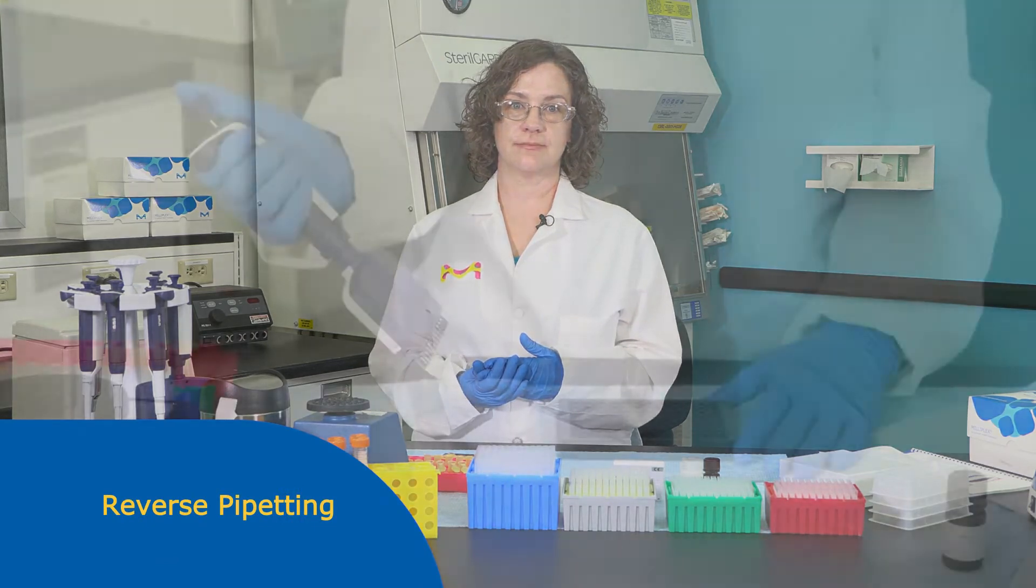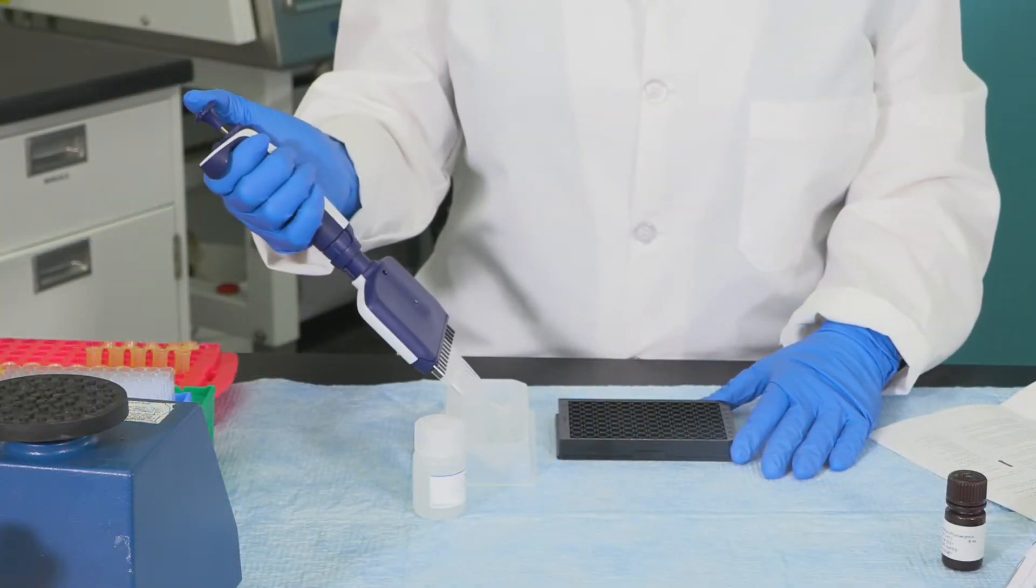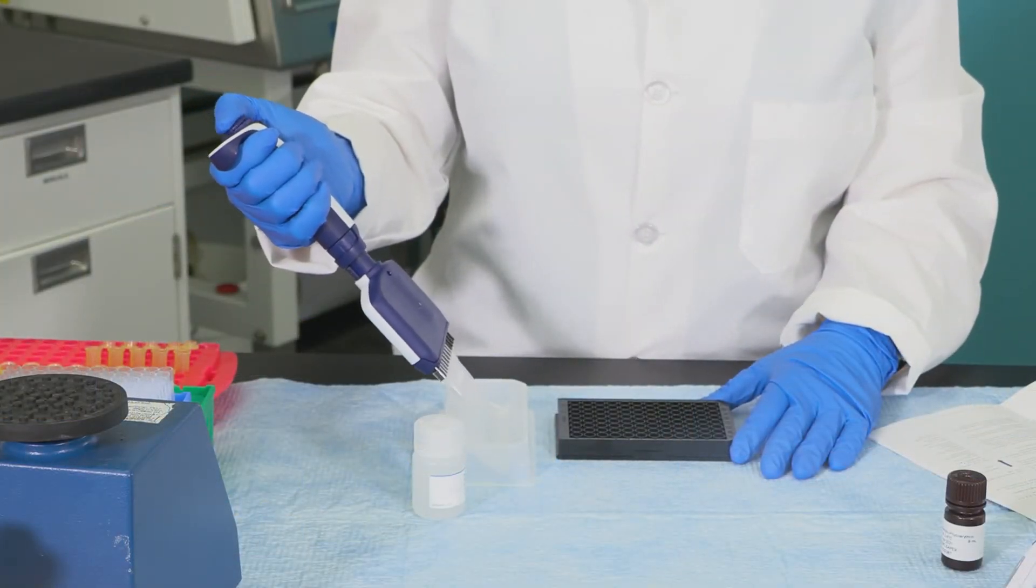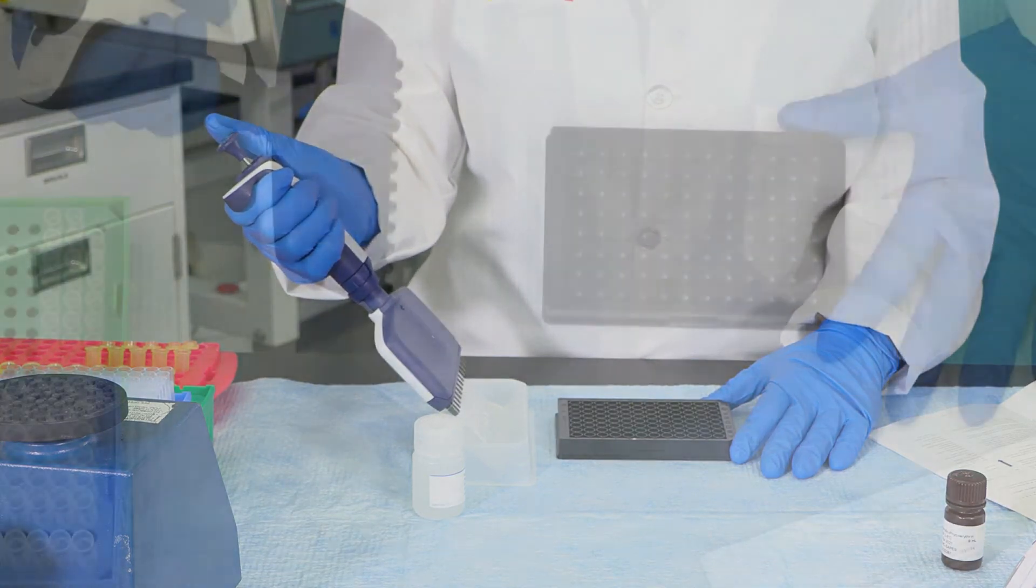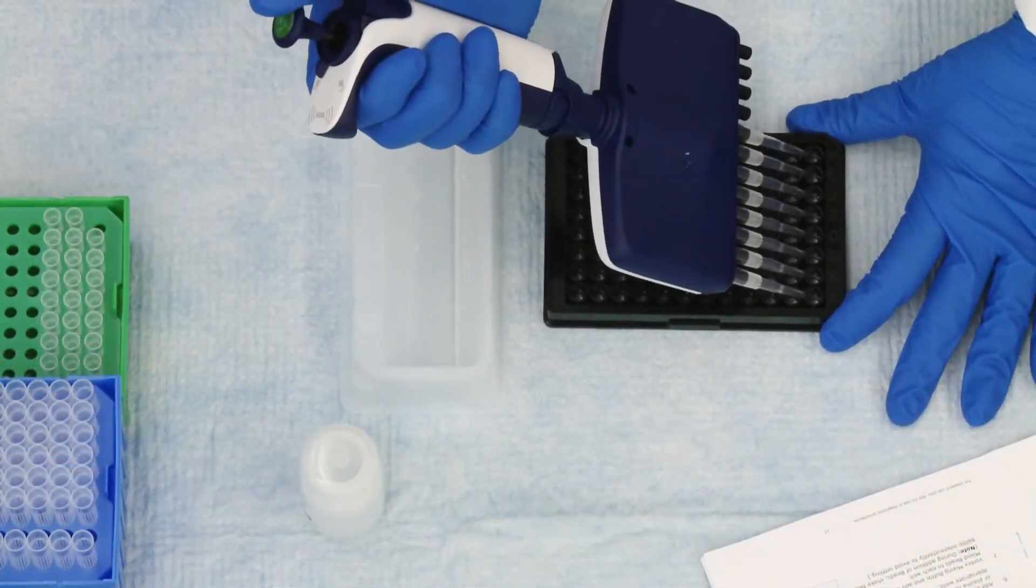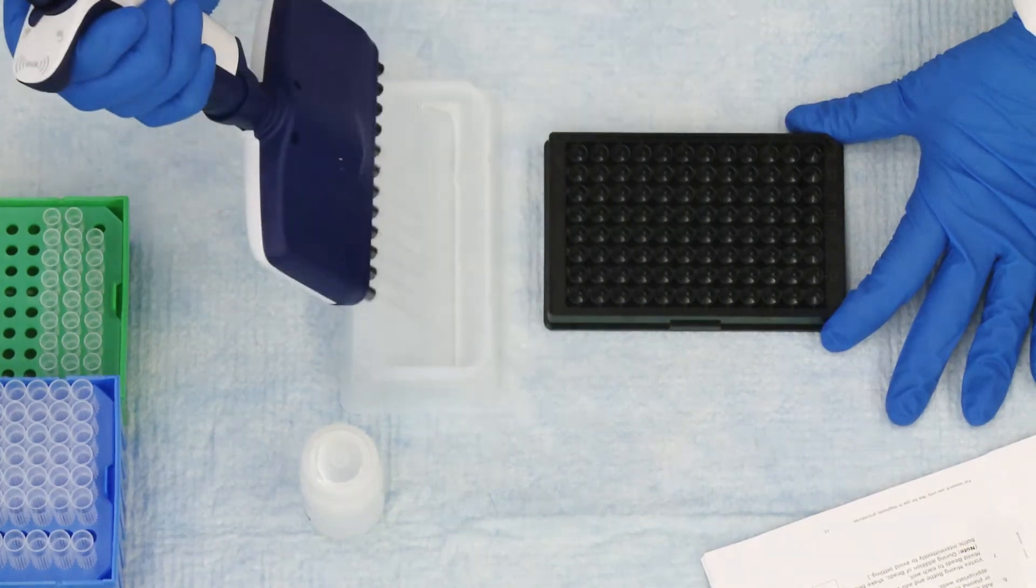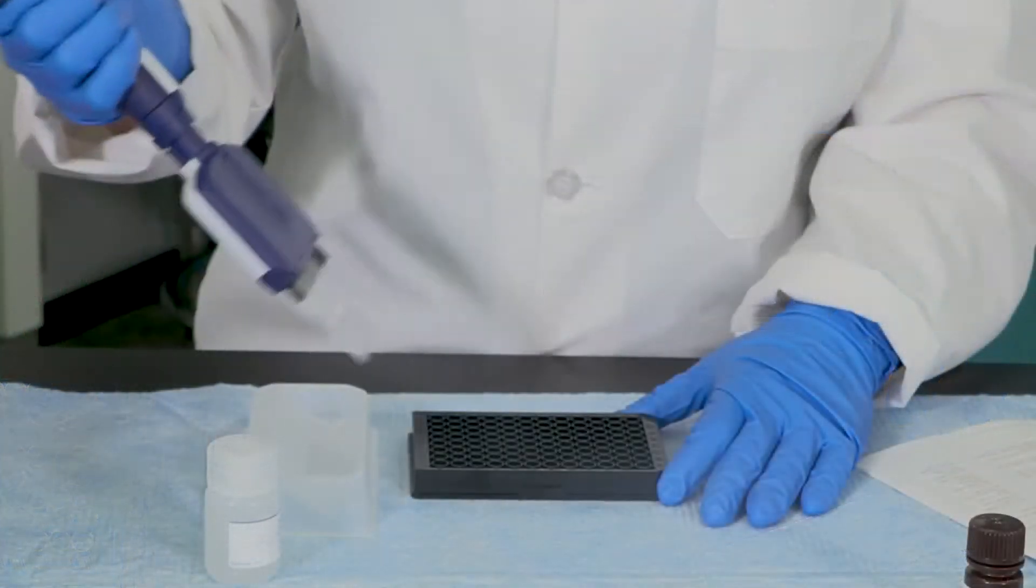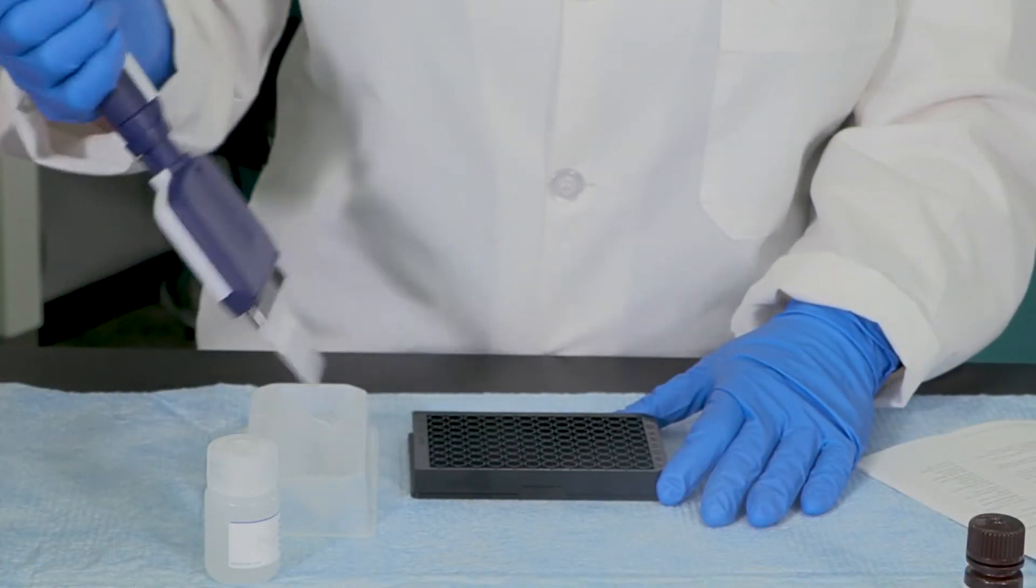Use reverse pipetting for more accurate dispensing. Begin by depressing the plunger past stop one and aspirate the liquid. To dispense the liquid, touch the tip against the well wall and push the plunger only to the first stop to dispense the intended volume.